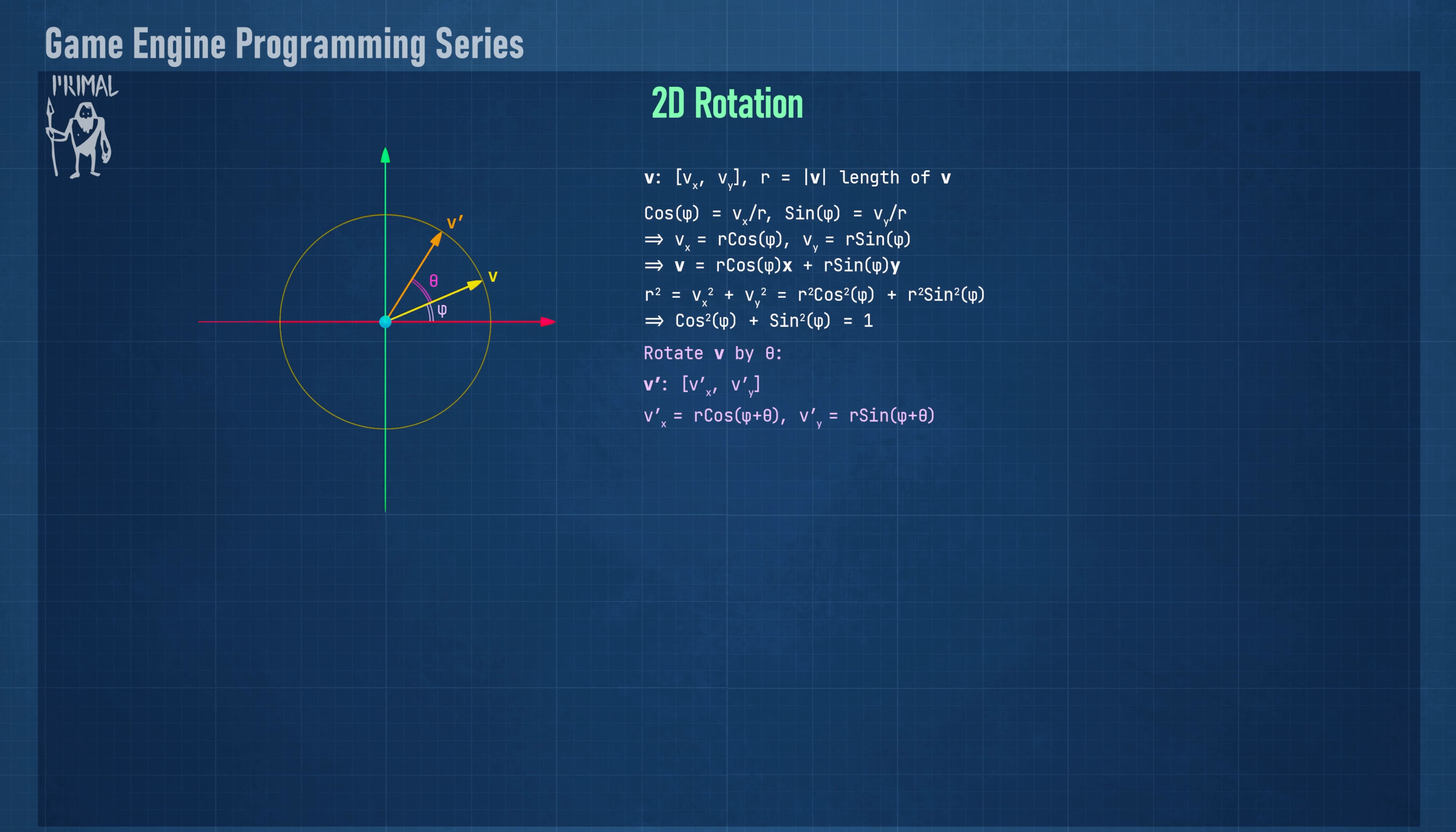From this we can write vector v in terms of the angle phi. Now let's try rotating v by an angle theta, which transforms v to a new vector v prime. The angle between v prime and the x-axis is the sum of phi and theta, which we can use to get the x and y components of v prime. Using these trigonometric identities, we can split the terms as functions of phi and theta. Next we can replace the sine and cosine of phi with x and y components of v. The length of the vector cancels out, which makes sense because rotating a vector doesn't change its length.